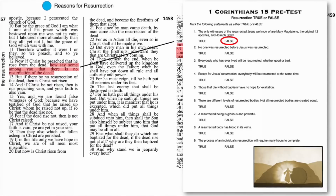Statement number two: no one was resurrected before Jesus was resurrected. Go to 1 Corinthians 15:20. "But now is Christ risen from the dead and become the first fruits of them that slept." The answer is true. Verse 20 tells us that Jesus was the first fruits of them that slept — as far as this world is concerned, Jesus was the first to be resurrected. Sometimes a student will say, what about Lazarus? The answer is no — Lazarus was not resurrected. He was raised from the dead and brought back to his mortal body, but eventually Lazarus died again. To be resurrected is to be reunited with a perfect eternal body that will never die. In that sense, Jesus was the first.